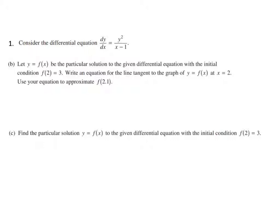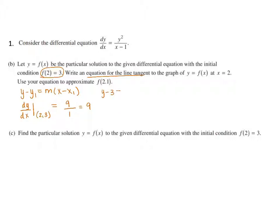For our next problem, they want us to write the equation of a tangent line. They give us the ordered pair (2, 3). The equation of the line tangent is y minus y₁ equals m times x minus x₁. We already know our y₁ and x₁ from the given. We're going to plug in our ordered pair into our given slope — so we estimate dy/dx at (2, 3). When I substitute in, I'm going to have 9 over 1, which gives us 9. So we have y minus 3 equals 9 times x minus 2. That's our equation of our tangent line.